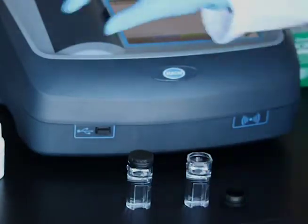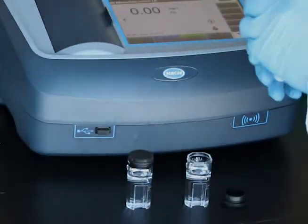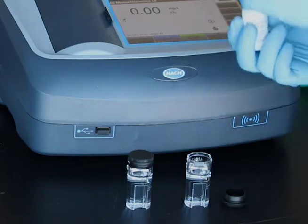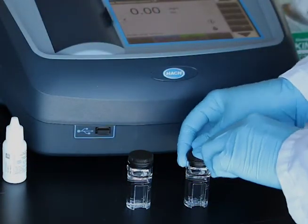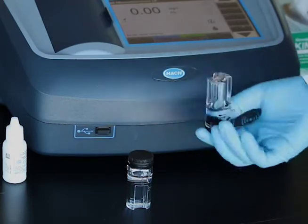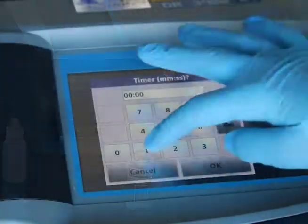To the cell marked free ammonia, add one drop of the free ammonia chlorinating solution. Stopper the cell and invert to mix the reagent for 15 seconds. Start a timer for 1 minute.